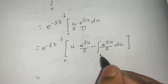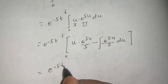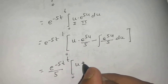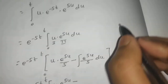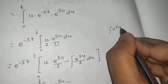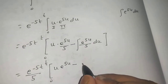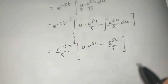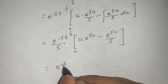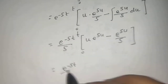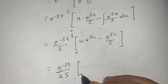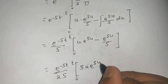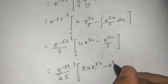Taking 1/5 common, we get e^(-5t)/5 times the expression from 0 to t: u·e^(5u) minus the integral of e^(5u) du, which gives e^(5u)/5. Taking the factor of 5 common again, we are left with 1/25 times (5u·e^(5u) minus e^(5u)), which we can write as e^(5u)(5u - 1), all evaluated from 0 to t.